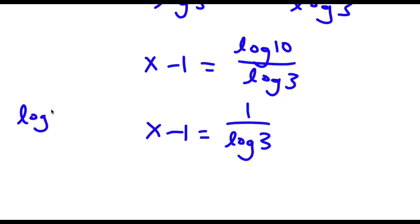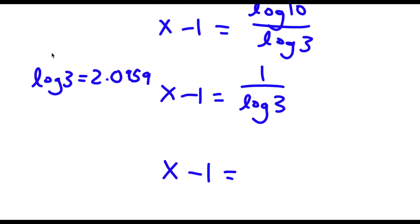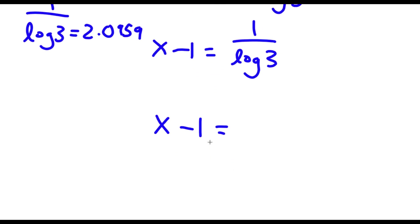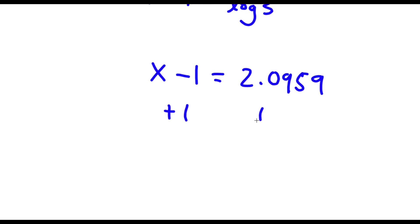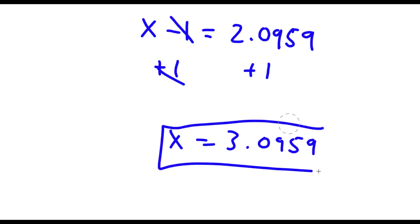And log 3 is equal to 2.0959. So x minus 1 is equal to 1 over log 3, which equals 2.0959. So x minus 1 is equal to 2.0959. Now adding 1 to both sides, these cancel out, and I'm left with x is equal to 3.0959. So this is my answer.